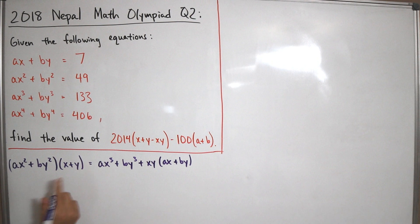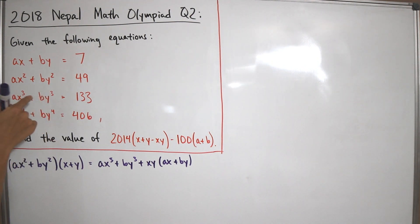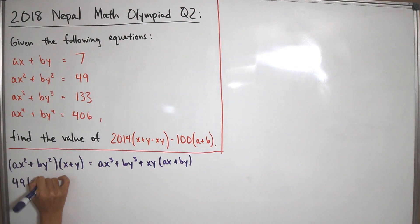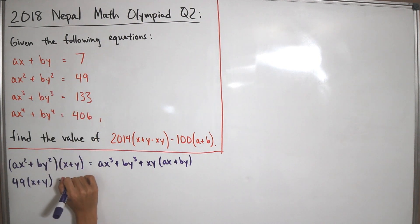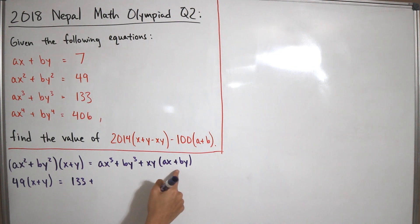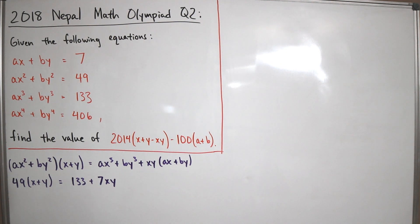We can substitute our known values directly. On the left, ax² + by² = 49, multiplied by (x + y). On the right, ax³ + by³ = 133, plus xy times (ax + by) = 7. This gives us: 49(x + y) = 133 + 7xy — our first equation.